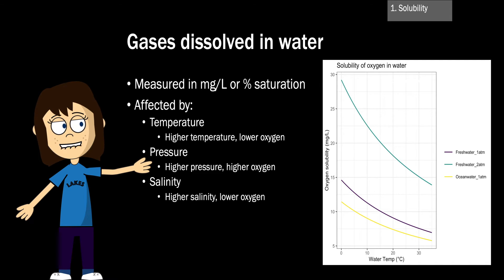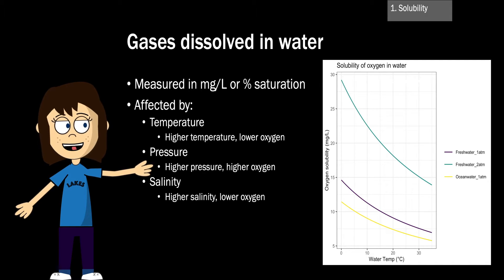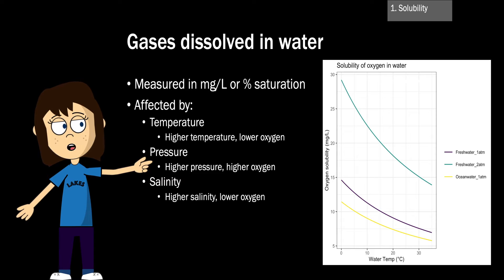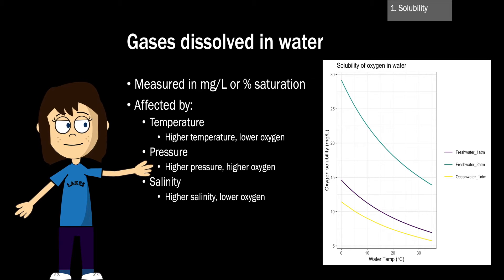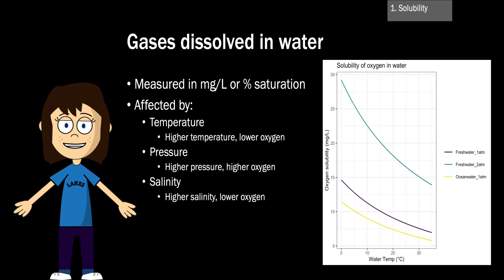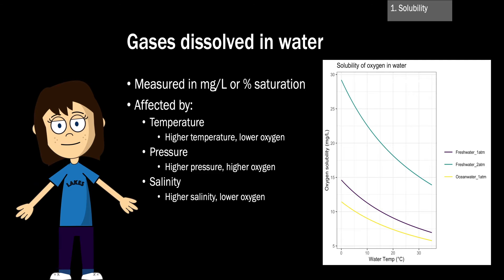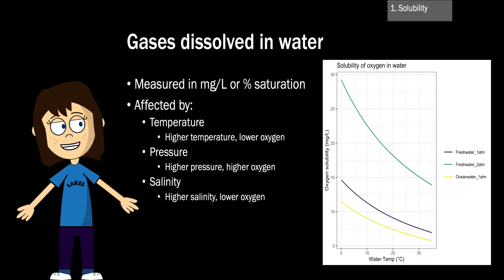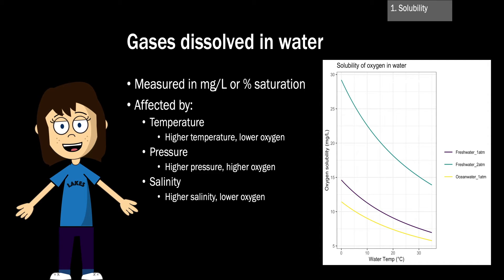The solubility of oxygen in water is affected by temperature, pressure, and salinity. As water temperature increases, solubility decreases, meaning less oxygen is available in the water column. As pressure increases, solubility also increases — so a high alpine lake at low atmospheric pressure would have lower oxygen solubility. Higher salinity also lowers oxygen concentration, although the difference between freshwater and ocean water is much smaller than the difference caused by temperature or pressure changes.